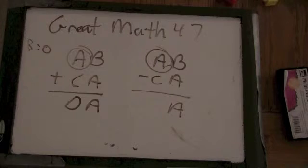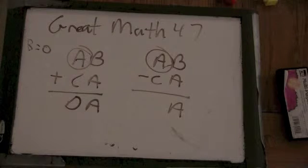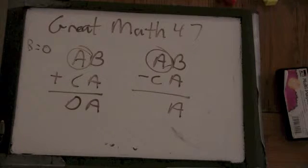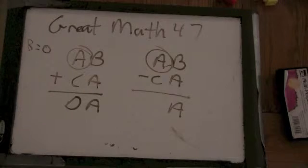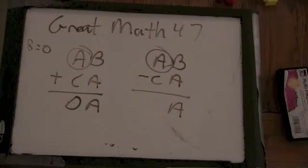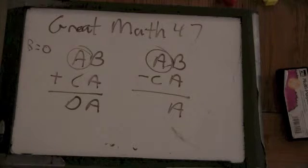So we also know that AB and CA differ by less than 10. Okay. Since you subtract them you get a one digit number. Yeah. And if you add them, you get this number.